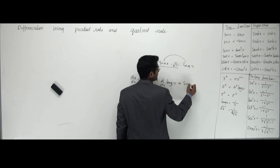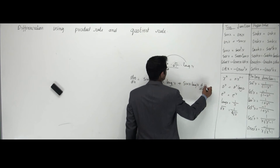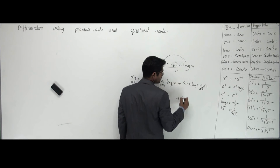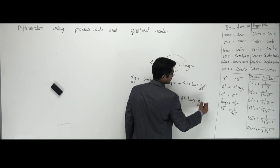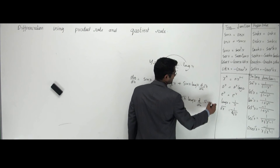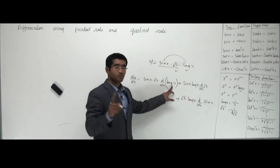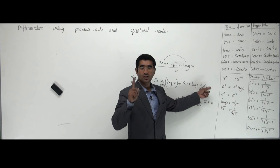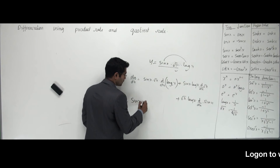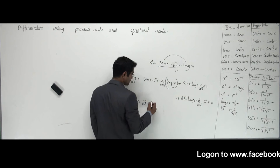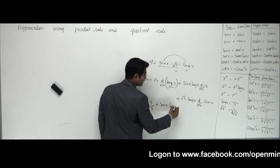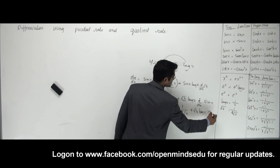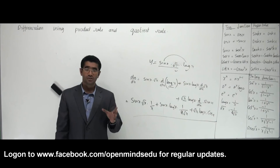Then finally, keep √x and log x and differentiate sin x as cos x. So the full answer looks like: sin x · √x · (1/x) + sin x · log x · (1/(2√x)) + √x · log x · cos x. Differentiation is happening for only one function at a time even though there are multiple functions.